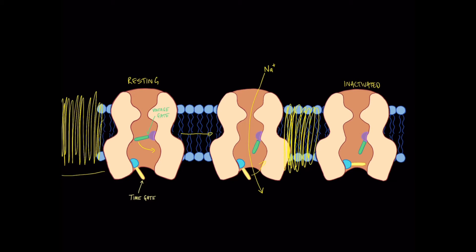The voltage-gated sodium channel has three different configurations. On the left, the resting state: voltage gate closed, time gate open. In the middle, the open configuration: the voltage gate has been triggered to open by a voltage change in the muscle membrane, and the time gate has not yet closed, so sodium rushes down its concentration gradient. On the right, the inactivated state: the voltage gate is still open because it's still experiencing the voltage change, but a fixed period of time has elapsed since the voltage gate opened, causing the time gate to close. That's how these time gates work — they stay open until a fixed period of time after the voltage gate has opened, and then they close.